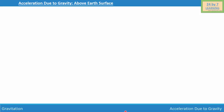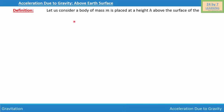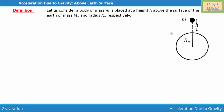Let us consider acceleration due to gravity above Earth's surface. We have a body of mass m placed at a height h above the surface of the Earth, which has mass Me and radius Re. Now let's consider the diagram — this is the Earth of mass Me with radius Re, and the body of mass m is above the surface at height h from the surface of the Earth.